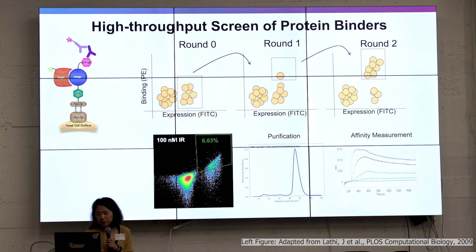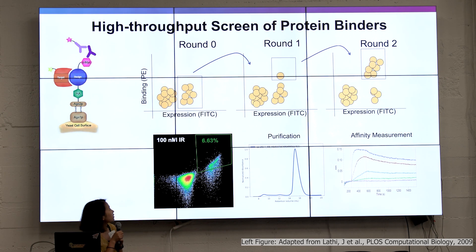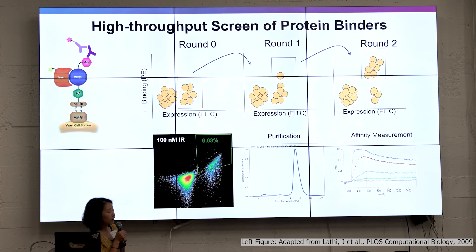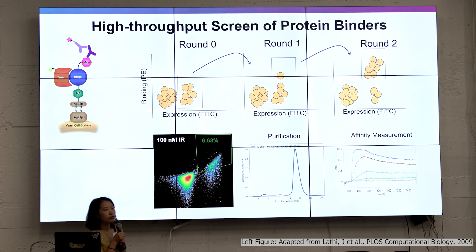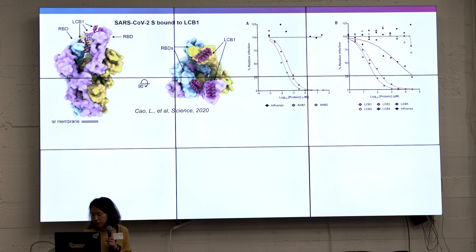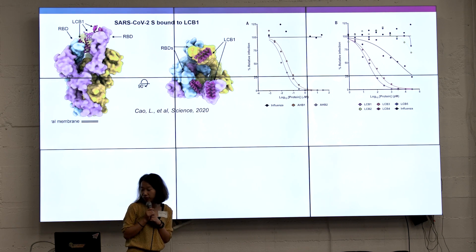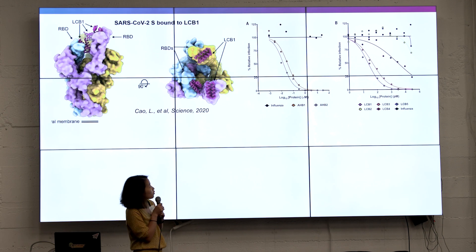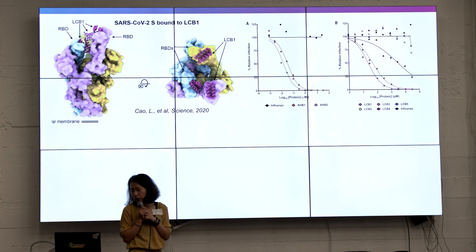For the insulin receptor, here's some data showing that we were able to identify binders that target the insulin receptor at certain concentrations. This graph shows binding at 100 nanomolar, though they are actually somewhat tighter. Once we identify the protein, we purify it and check affinity using different techniques — here is a graph showing BLI data. Because a lot of my work is still ongoing and unpublished, I'll use a published COVID example to illustrate further.